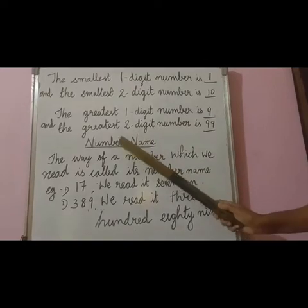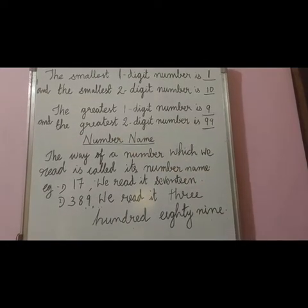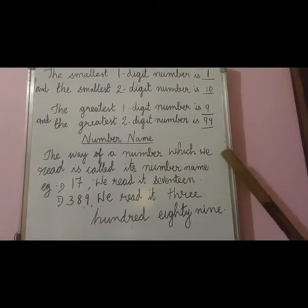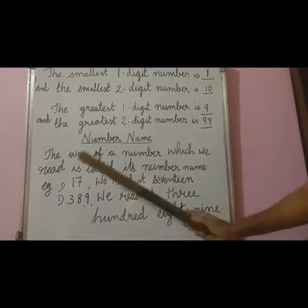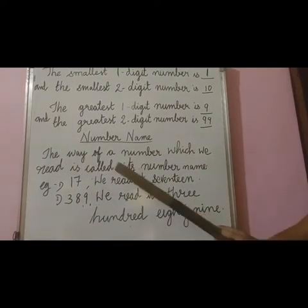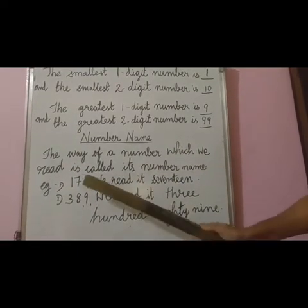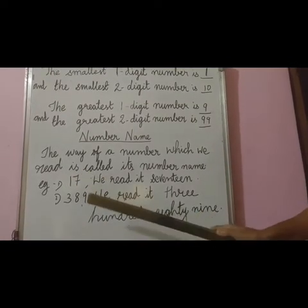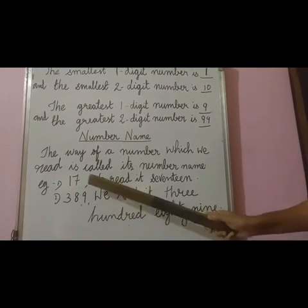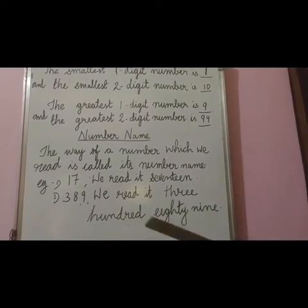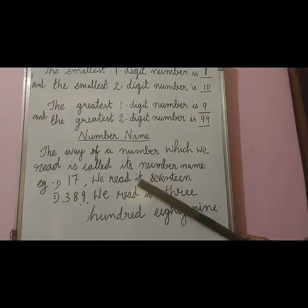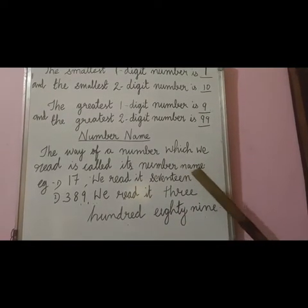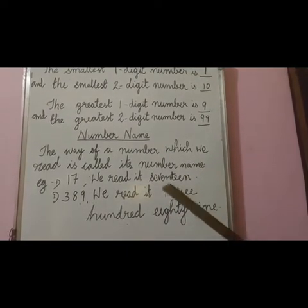Now next is number name. What is number name? The way of a number which we read is called its number name. Here I have given an example. I have written 1 and 7 together. How do we read it? We read it 17, because 17 is its number name.